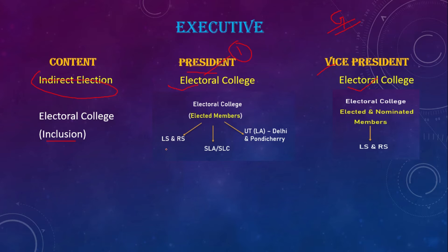In the Electoral College, first, both Houses of Parliament — Lok Sabha and Rajya Sabha. Next, the State Legislative Assembly or State Legislative Council. If we are in Tamil Nadu, we have a legislative assembly. If we are in a bicameral state, then we have a legislative council. These two bodies are part of the Electoral College.